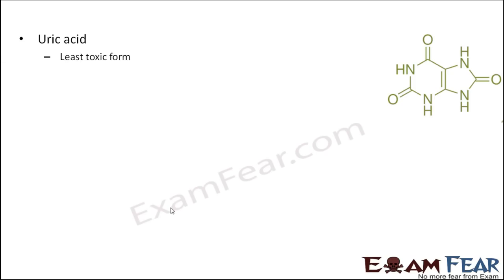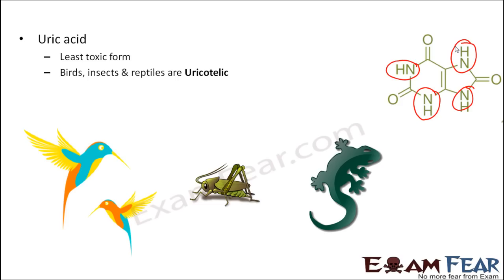The third nitrogenous waste is uric acid, which is the least toxic form. Its structure also has a lot of nitrogen in it, which is why it is a nitrogenous waste, but it is the least toxic. Birds, insects, and reptiles are uricotelic — remember not to confuse ureotelic (urea) with uricotelic (uric acid). In organisms that excrete in the form of uric acid, water loss is minimum, and so the excretory product is almost a solid excreta.